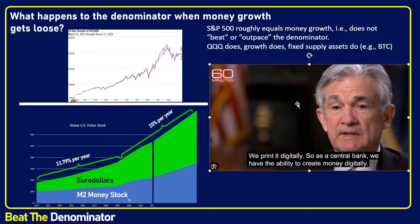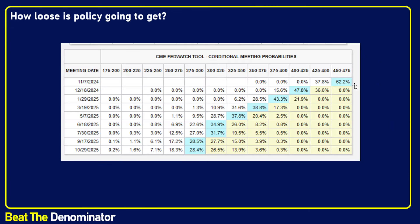The chair of the Fed says it outright: 'We print it digitally. As a central bank, we have the ability to create money digitally.' The commercial banks do the same thing. When you go borrow a million dollars to buy a house, you're not taking that money from a saver — it is a double-entry accounting game. The money is new money being issued whenever you get a loan or a mortgage. That's how the money supply ends up growing to epic proportions, and that is why when you drop the rates, more money will be printed mostly by commercial banks.